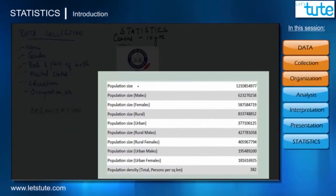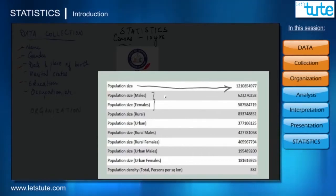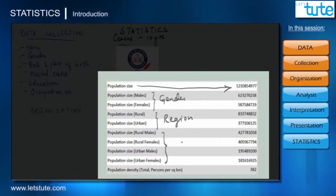For example, take a look at this data from the recent Indian census. We got data about the population size of India. We can organize it in terms of gender, or in terms of region - rural or urban, or in terms of both gender and region.